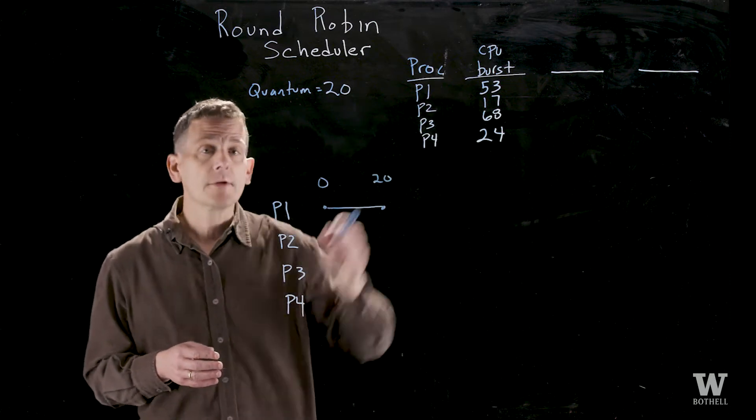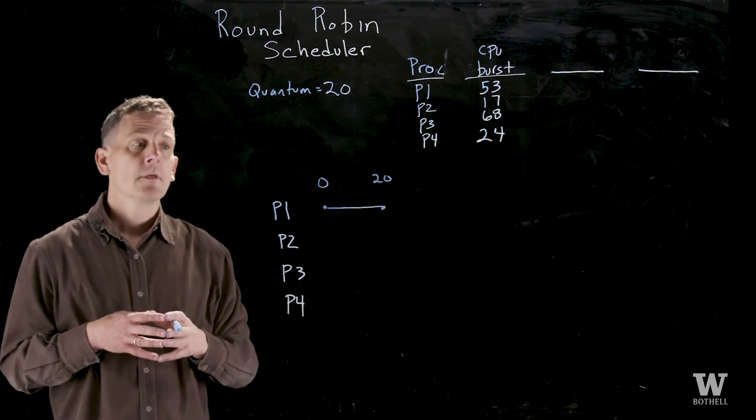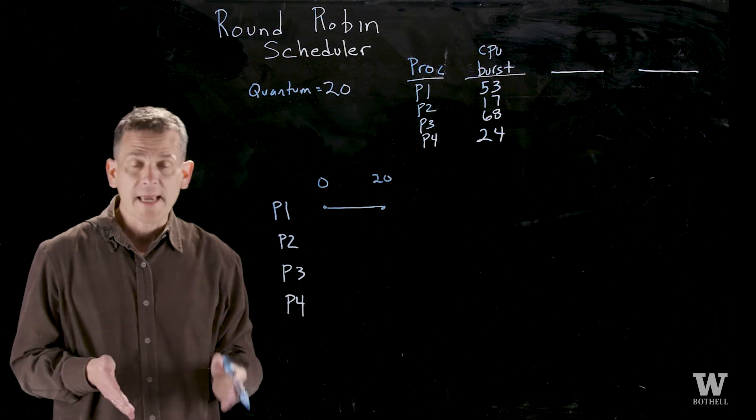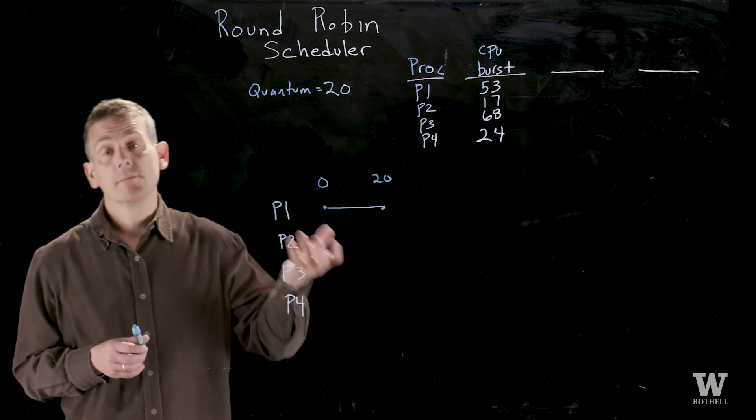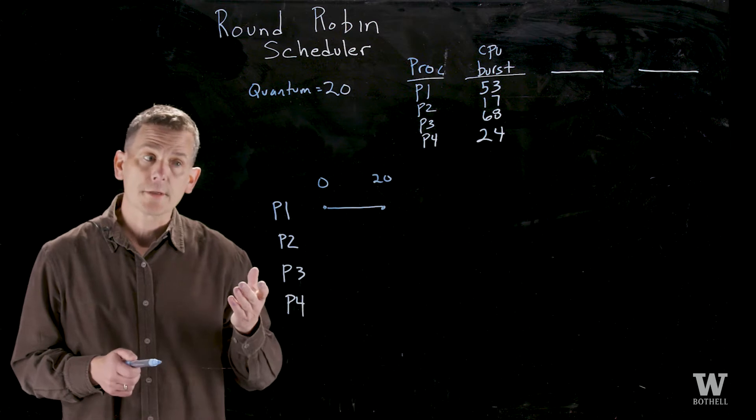Notice it required 53 milliseconds and so it still requires 33 milliseconds to run. After 20 milliseconds the operating system says you've had enough time and an interrupt happens. The process moves from the running state to the ready state, a context switch occurs, and the new process gets scheduled - in this case process 2.